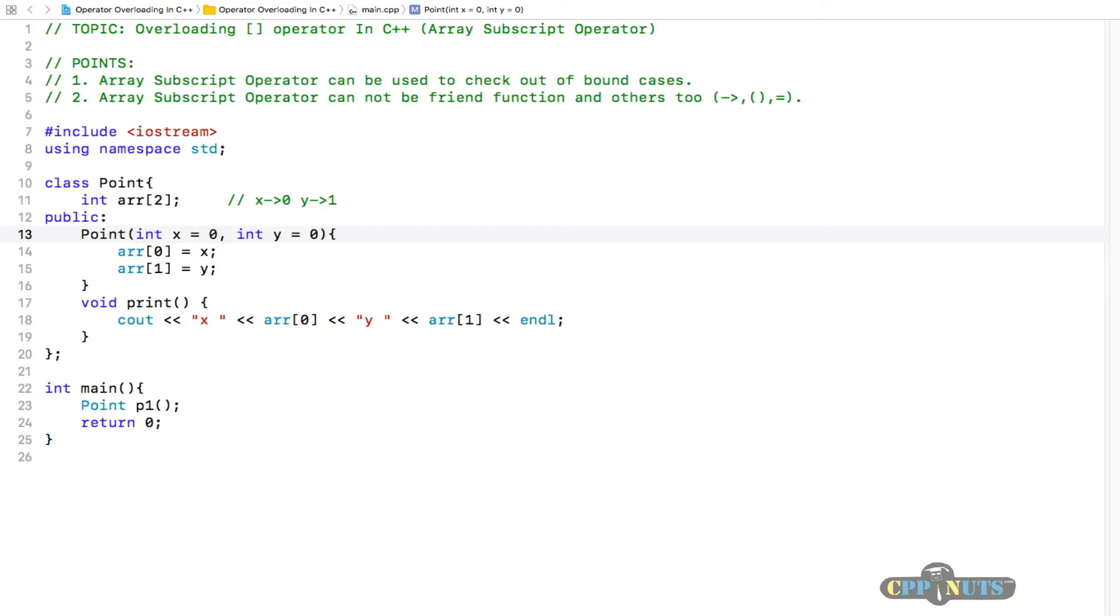Good to go. If we will not have anything here, it should be 0 and 0. Let's initialize them with 3 comma 4. If we will print p1.print, let's check the output here.